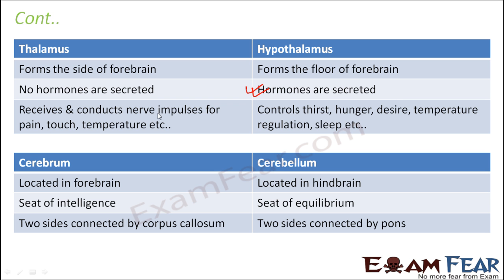Thalamus receives and conducts nerve impulses for pain, touch, temperature, etc. Whereas hypothalamus, since it secretes hormones, it can control different types of feelings like thirst, hunger, desire, temperature, sleep, etc.